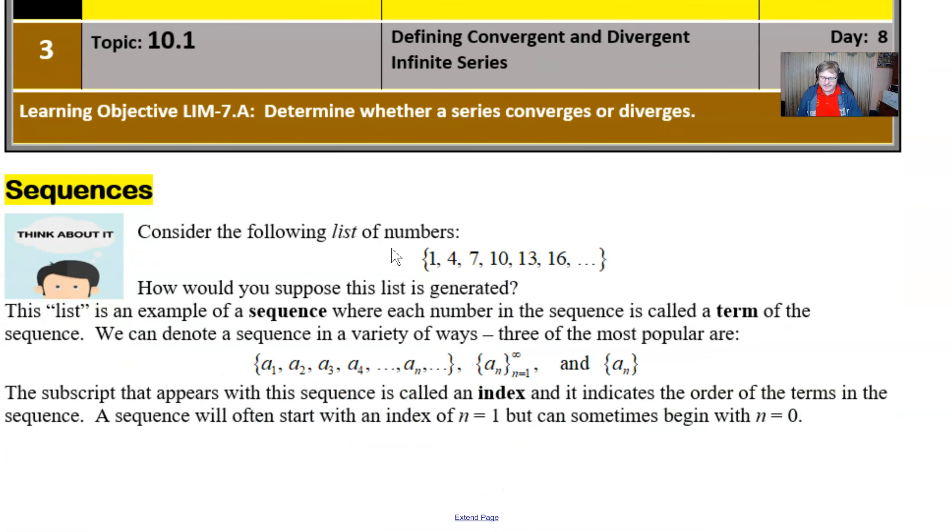But if we go to the idea of sequence, what really is a sequence here? Well, if you consider the following list of numbers: 1, 4, 7, 10, 13, 16. I want you to think about how that list is generated.